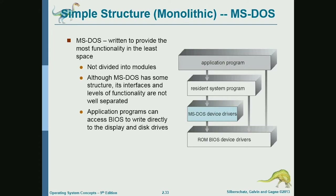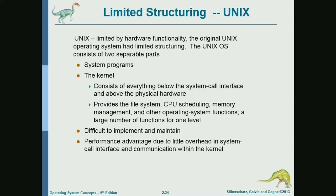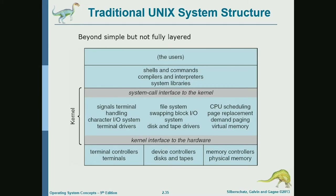Monolithic means the operating system is in one piece — it's not divided into modules and it's not structured. Examples include the DOS operating system, which was relatively small with limited features, and the earlier versions of Unix. As we will see later, real operating systems use a combination of approaches; all real operating systems are hybrid systems.